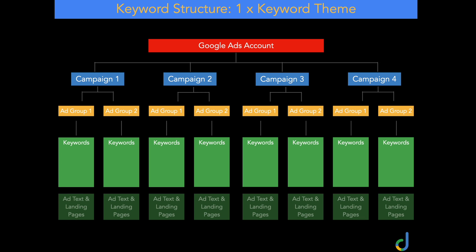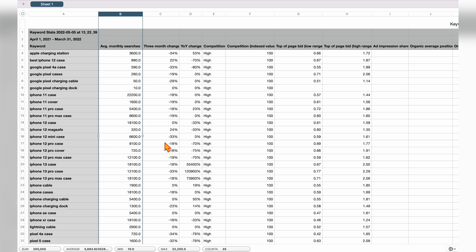With my initial keyword research, we had keywords around iPhone products, Samsung products, and the Google Pixel phone. Those three core products would actually be the making of our campaigns — we would have an iPhone campaign, a Samsung campaign, and a Google Pixel campaign. Within those campaigns, the individual ad groups would be broken down not only into phone cases and charging docks, but also into iPhone 12 cases, iPhone 11 cases, and iPhone 13 cases. That way, if someone searches for an iPhone 12 case, we take them to the landing page that sells iPhone 12 cases — not iPhone 11 or 13 cases.